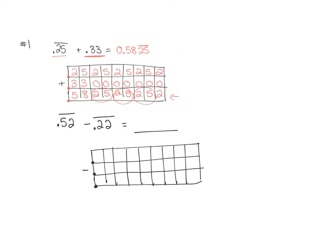We're also going to do a subtraction example, so we have 0.52 repeating minus 0.22 repeating. For my first row, 5, 2 repeating, I'm just going to go back and forth: 5, 2, 5, 2, 5, 2, 5, 2, 5, 2 — and if I end on a 5, that's okay. My second row, I'm just going to keep repeating the 2s, so it will go with 2s forever.